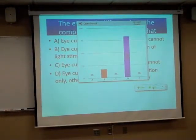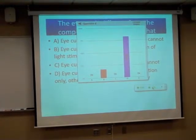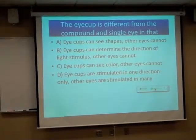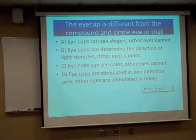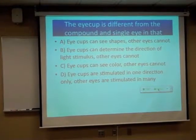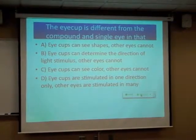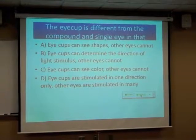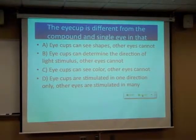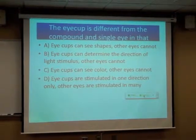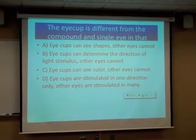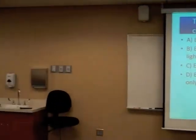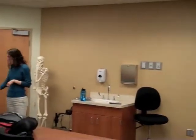We have more individuals converging on D at this time. Let's hear from the eye cup group — why is it that B is not true? Eye cups are unique in that they detect light versus dark and can give the organism the ability to move toward or away from light. But other eyes can tell us where light is as well — we as humans also have the ability to detect where light is coming from in our environment. So it's not unique in that respect.